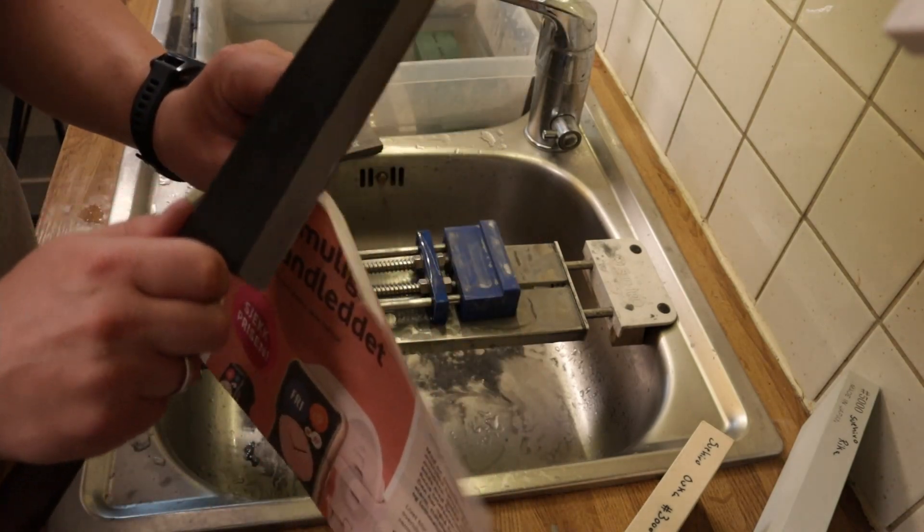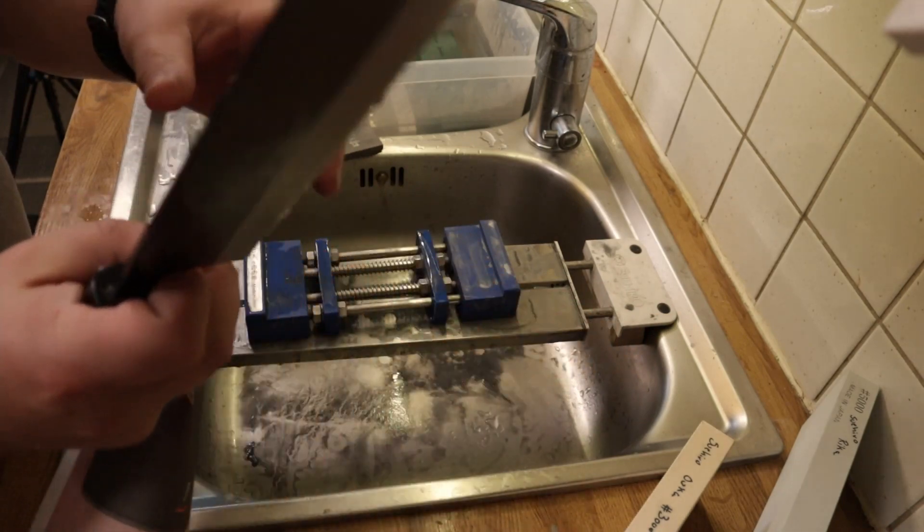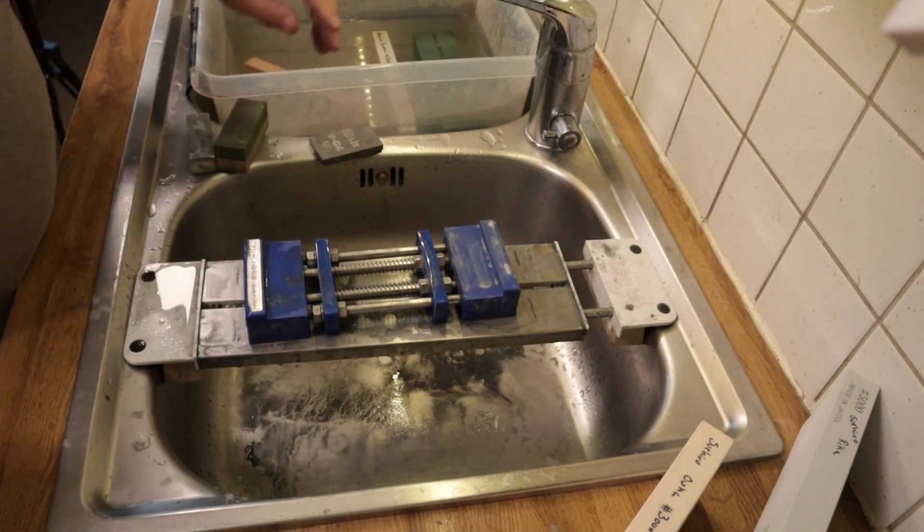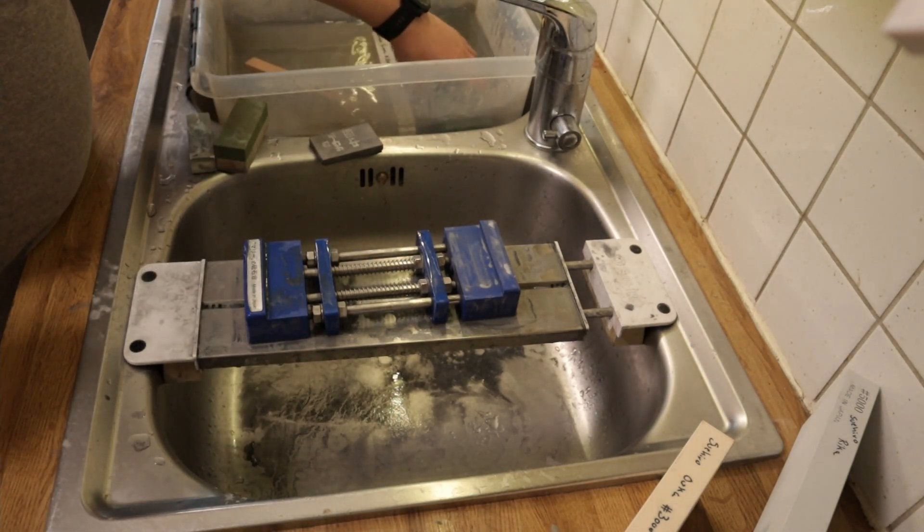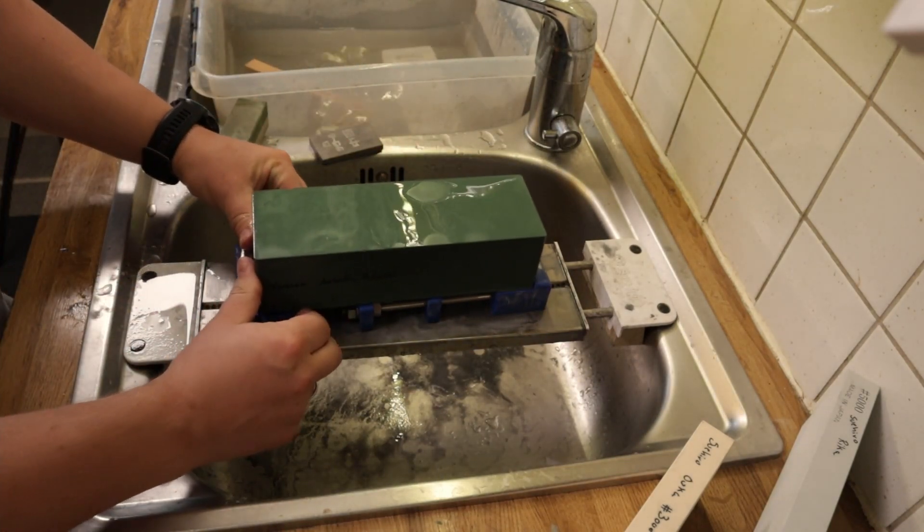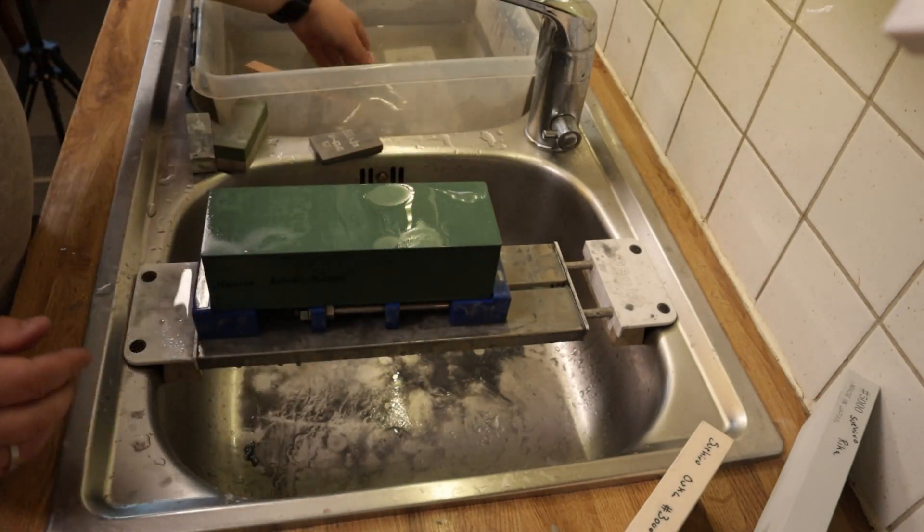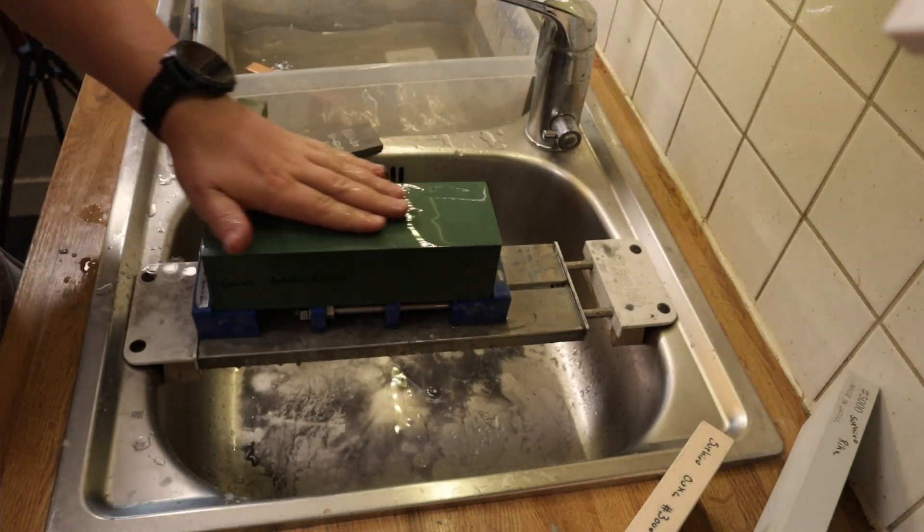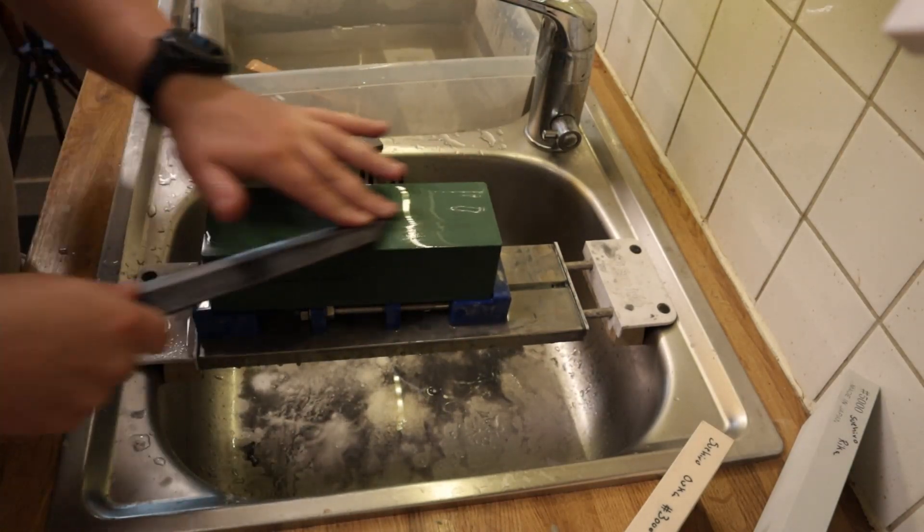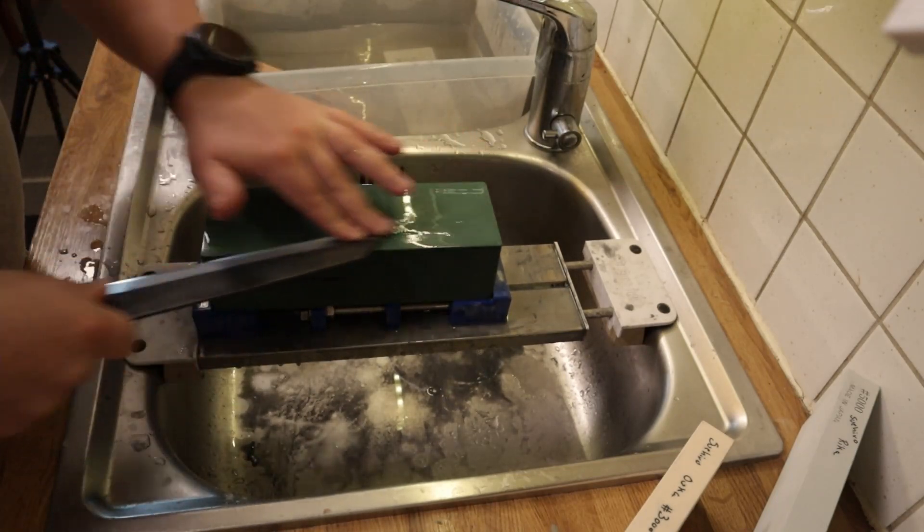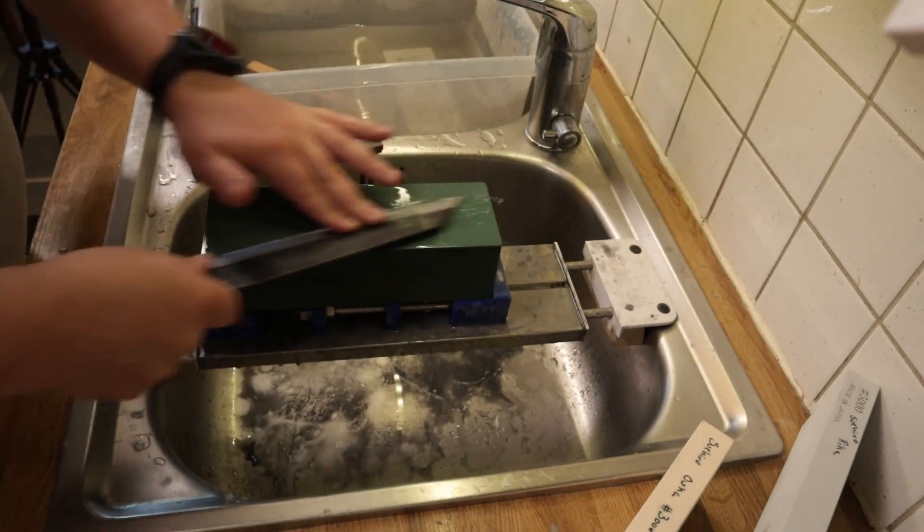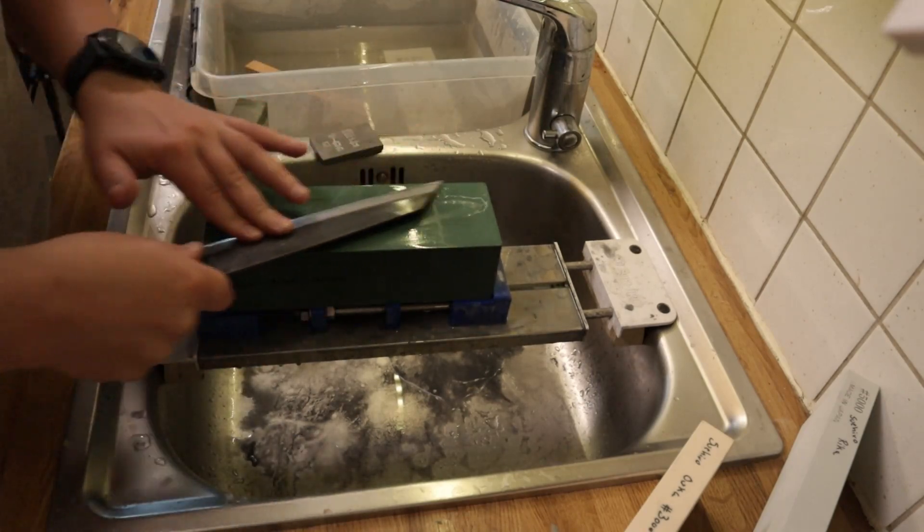So this is now a very dull knife. We are going to start with the Green Brick, the Aotoshi. I like to use it upside down just to preserve the stamp on it. So yeah, we are just going to go at it. So the Green Brick is a relatively soft stone, so you have to be a little bit careful so you don't dig into the stone when you are working on it.